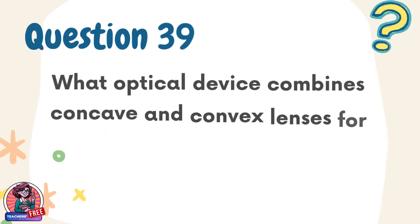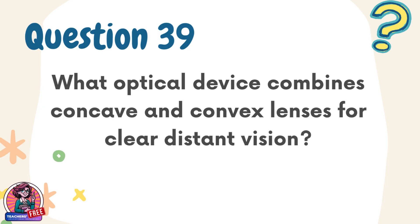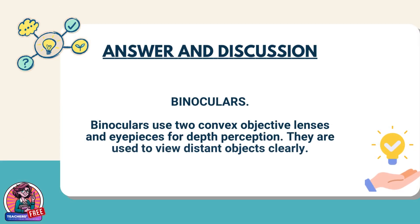Question 39. What optical device combines concave and convex lenses for clear distant vision? Answer: binoculars. Binoculars use two convex objective lenses and eyepieces for depth perception. They are used to view distant objects clearly.